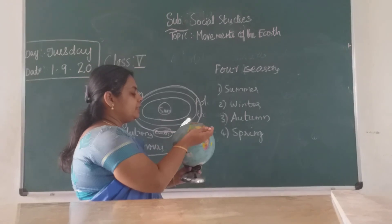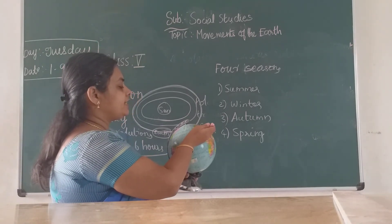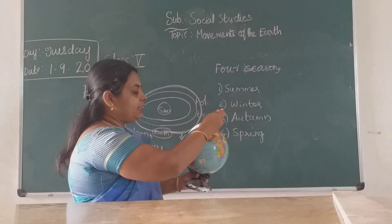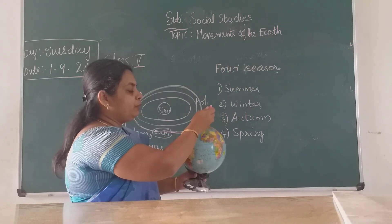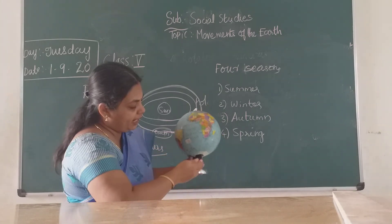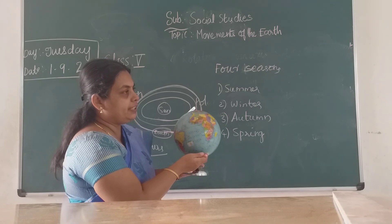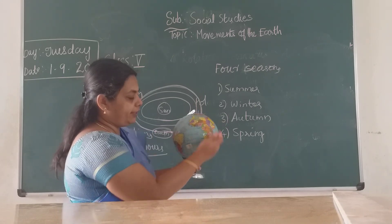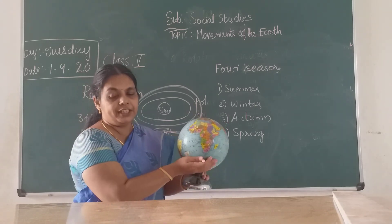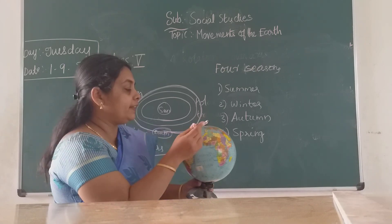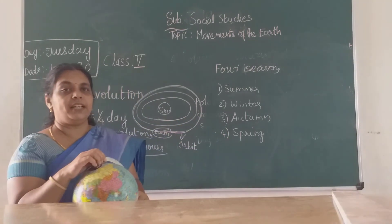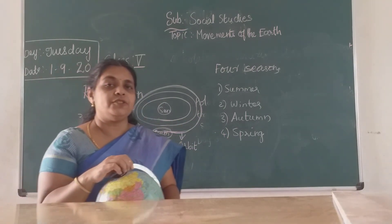When the northern hemisphere is tilted more towards the sun, it gets more sunlight and experiences summer, while the southern hemisphere is farther from the sun and gets winter. We will continue with the next class. Thank you, children.